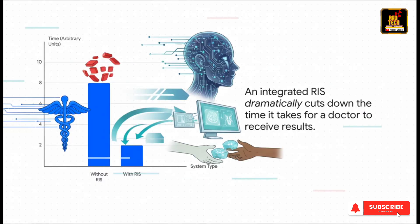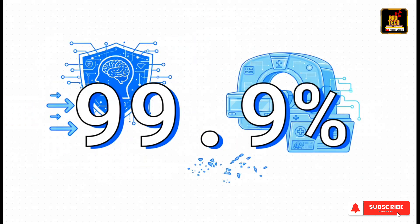Here's where you can really see the difference: speed. An integrated RIS dramatically reduces the time it takes for your doctor to get your results. By cutting out all the manual steps and delays, it gets that vital information to your care team faster than ever before. And what about safety? When you automate the flow of information like this, you just about eliminate the risk of human error — no more typos, no more patient mismatches. Your images are always linked to your file, ensuring an incredibly high level of data accuracy.